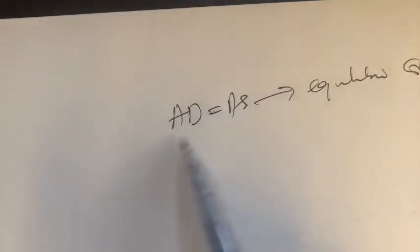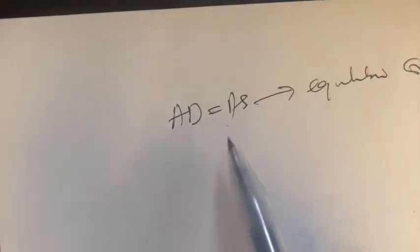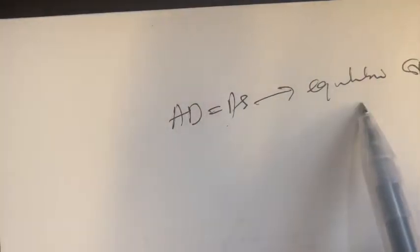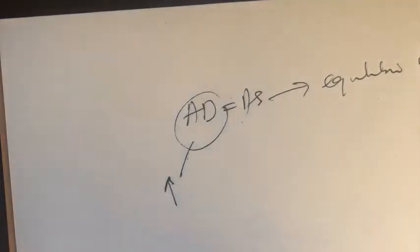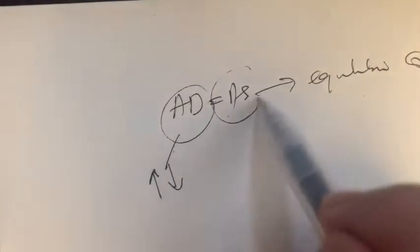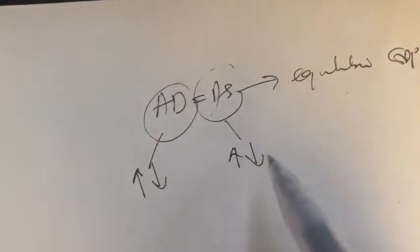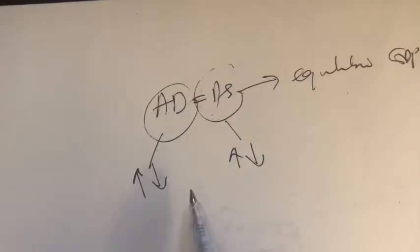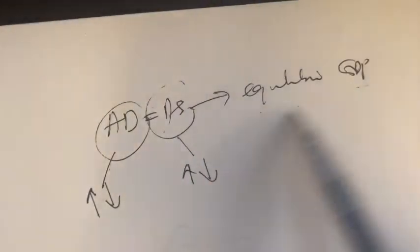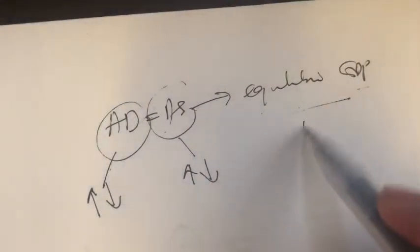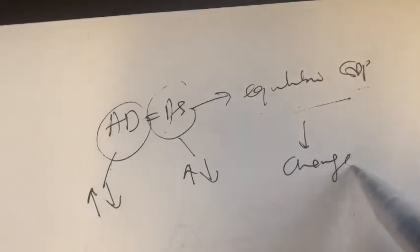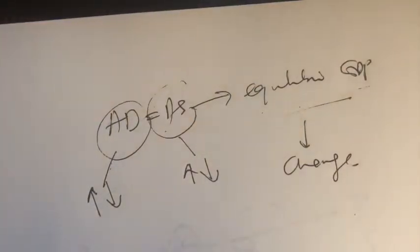Now when any one of these changes, there will be changes to the equilibrium GDP as well. Aggregate demand can either increase or decrease. Likewise, aggregate supply can also either increase or decrease. When any one of these changes happen, equilibrium GDP will also change. There are basically four instances when this happens, and we're going to look at them one by one.